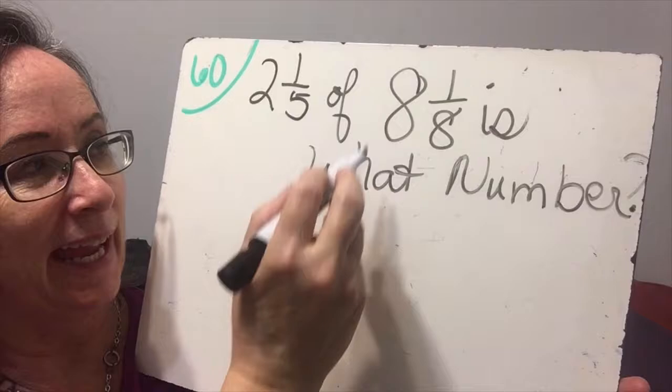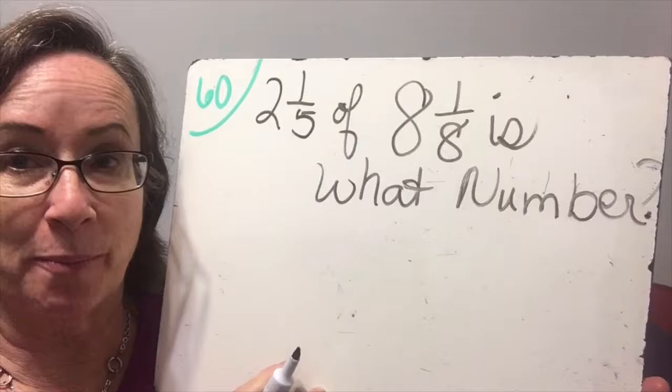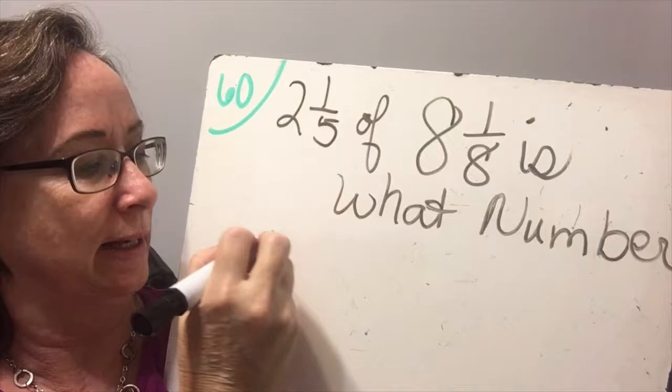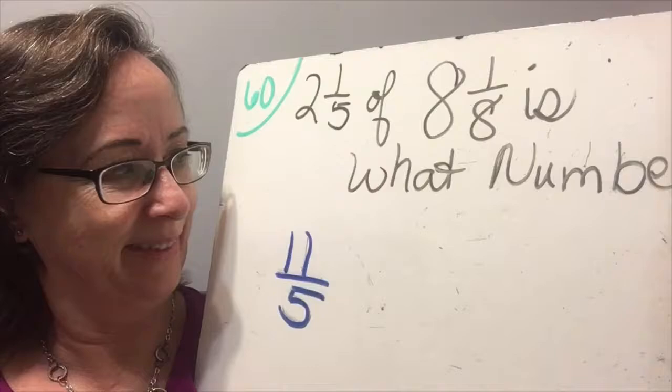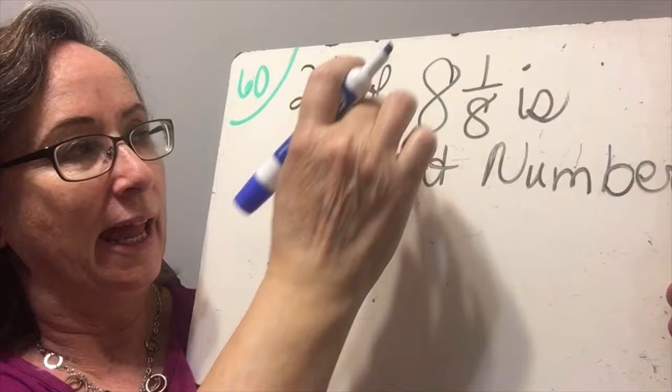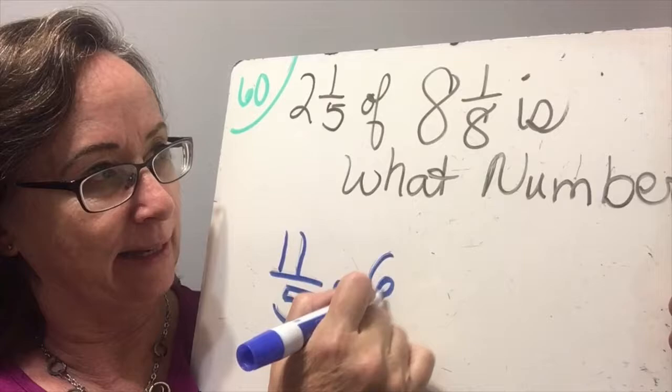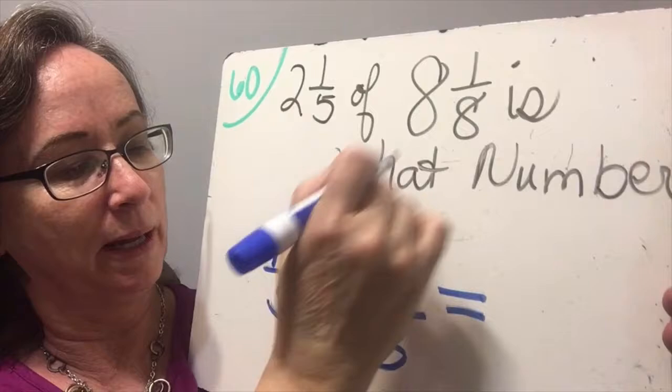Example number two: two and one fifth of eight and one eighth is what number? We start by turning each mixed number into an improper fraction. Two times five is ten, plus one is eleven fifths. Eleven fifths of — that's times — eight and one eighth: eight times eight is sixty four, plus one is sixty five eighths.